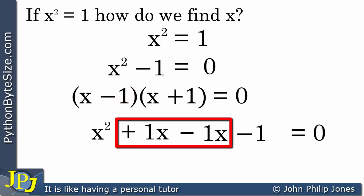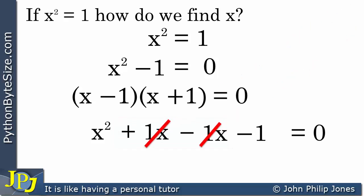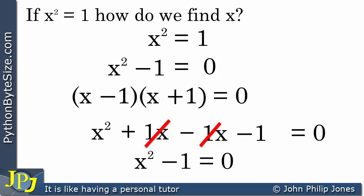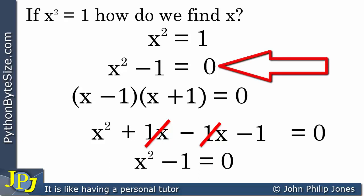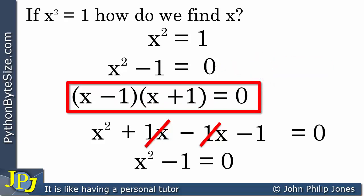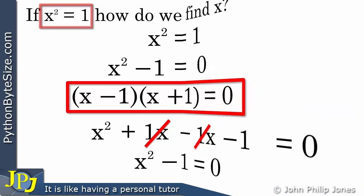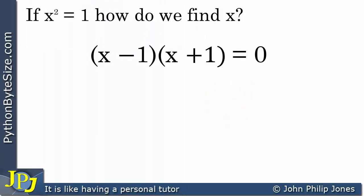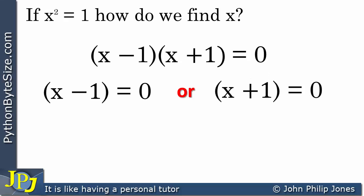I've got plus 1x minus 1x, so obviously those cancel. We then end up with x squared minus 1 equals 0, which is what we had, showing the factorization is correct. I can use this to find values of x. I can arrange for x minus 1 to equal 0, or I can arrange for x plus 1 to equal 0 — imagining each bracket equals 0 in turn.